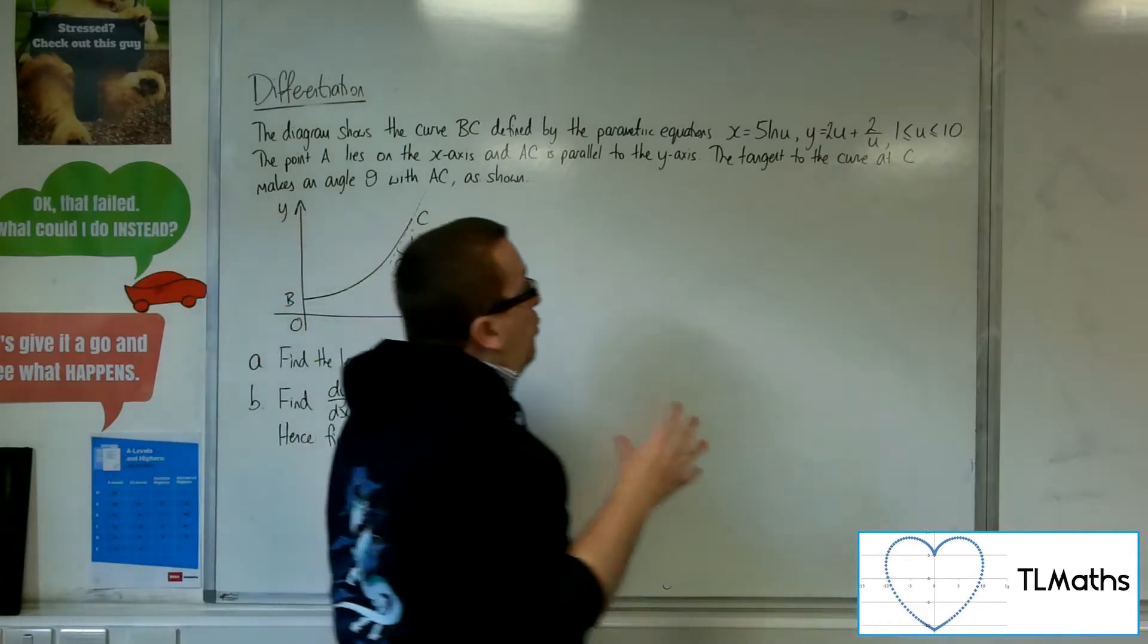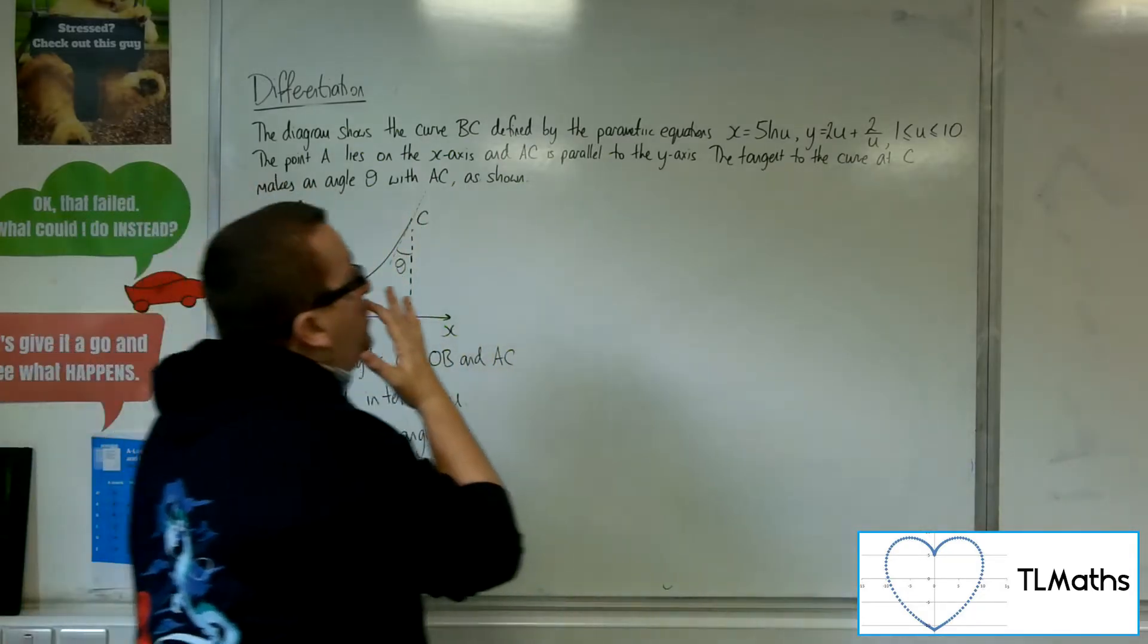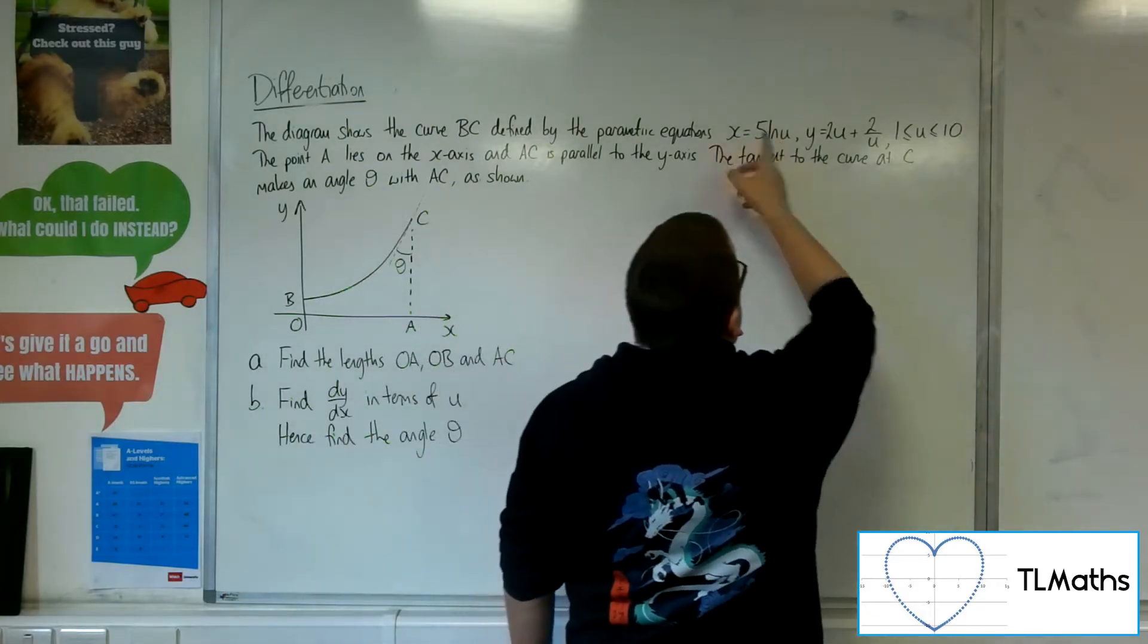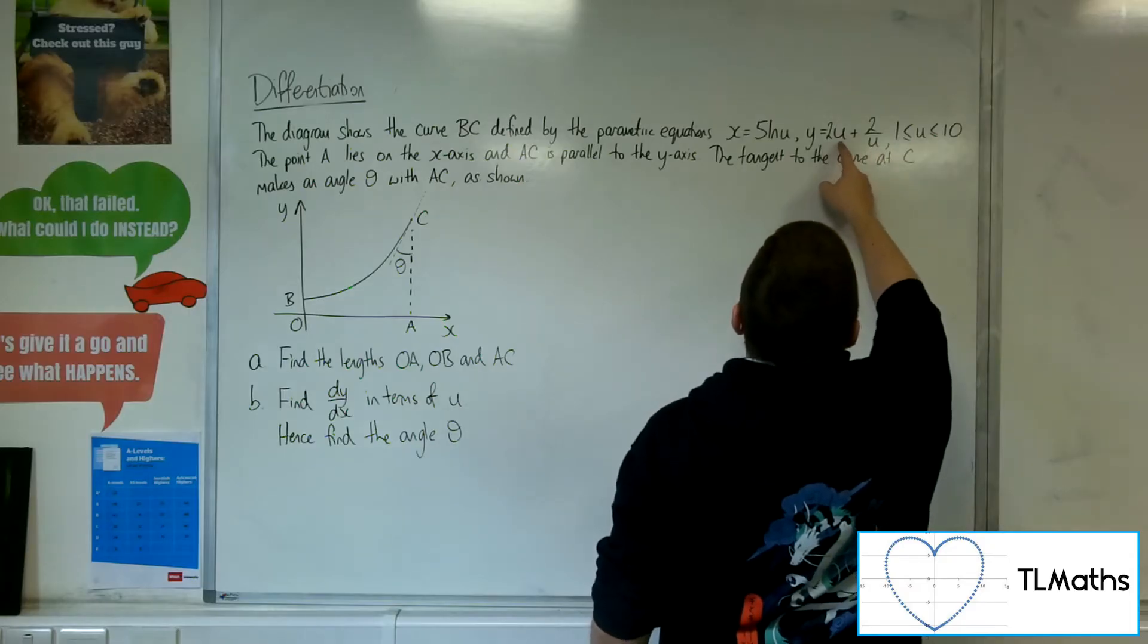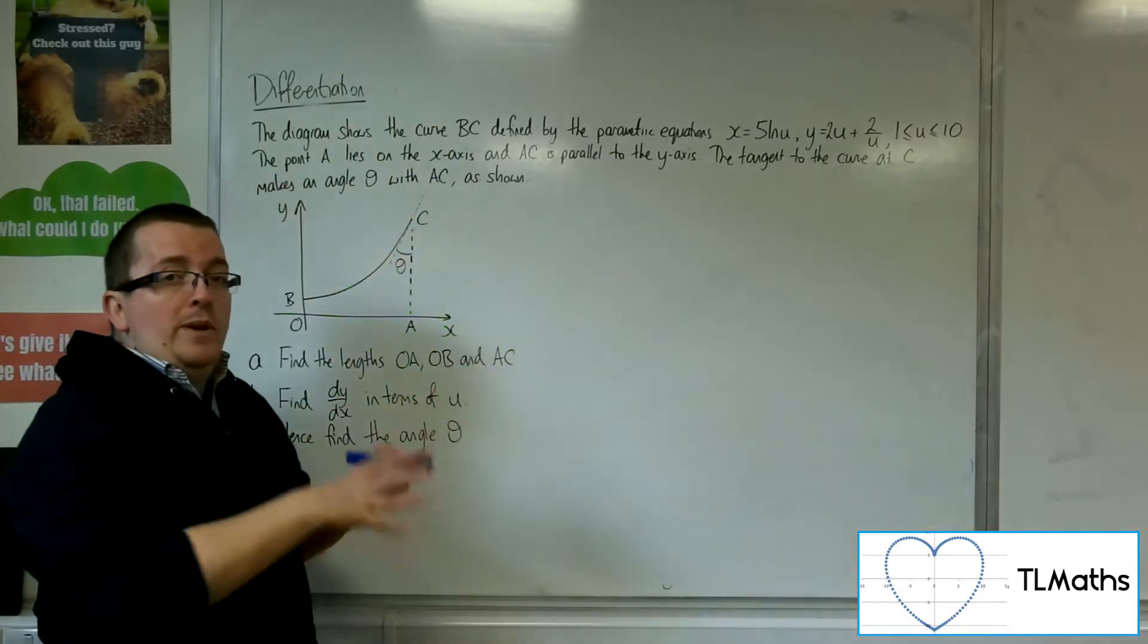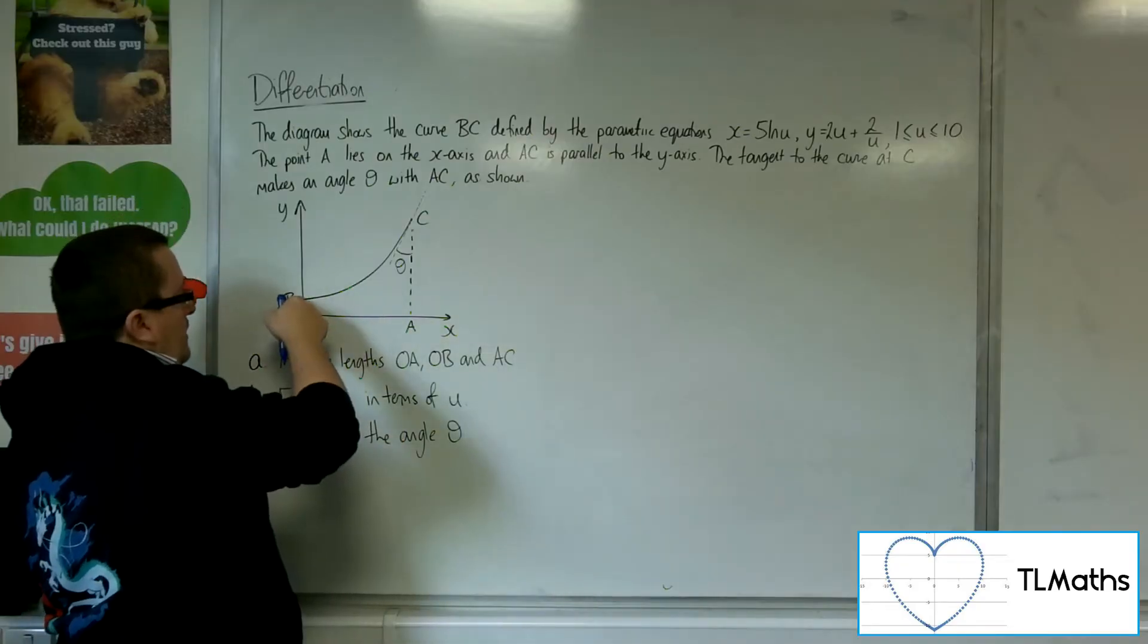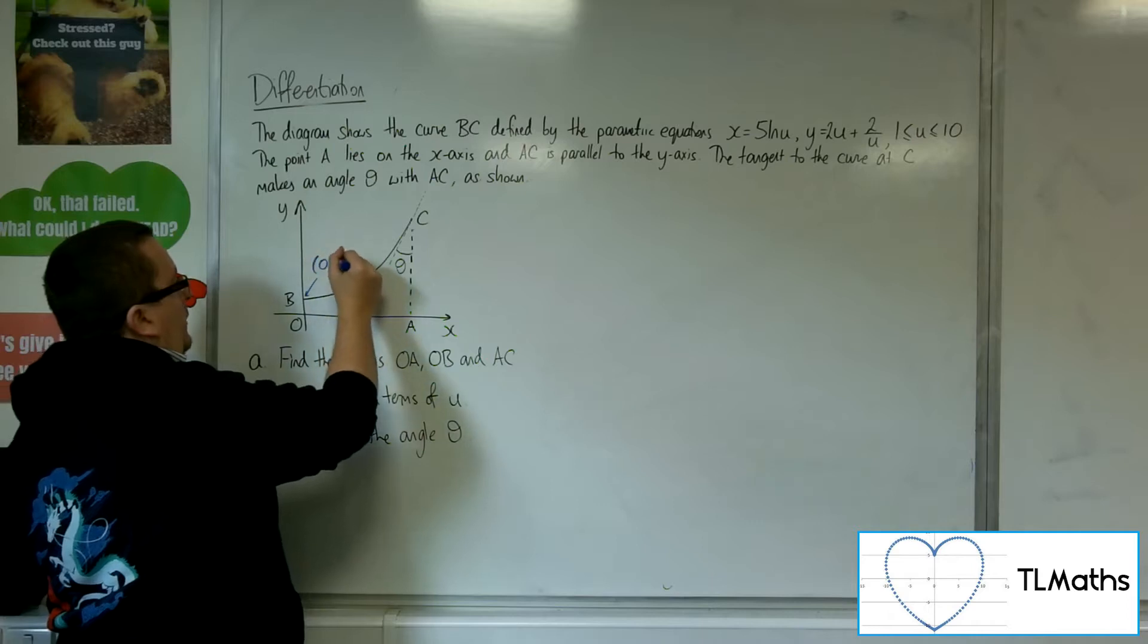So when u equals 1, where is it? When u equals 1, log of 1 is 0, so x will be 0, and y will be 2 times 1 plus 2 over 1, so 4. So 0, 4 is when u equals 1. So that must be that point there. So this point is 0, 4.